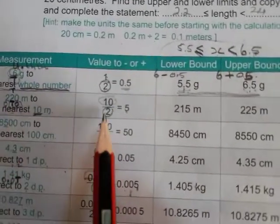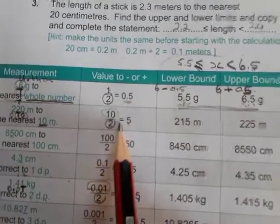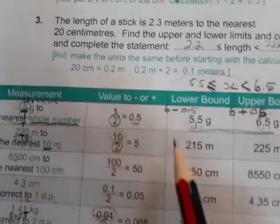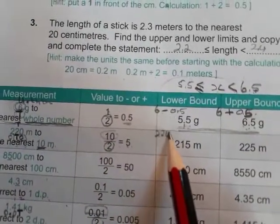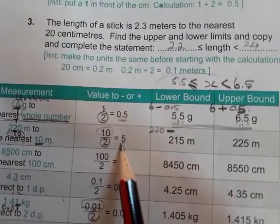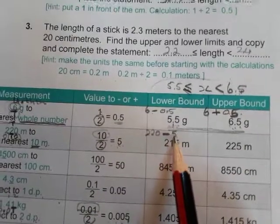Remember, here we got the 10. We divide that by 2, and we get 5. So now you take the original number that was given, 220. To get the lower bound, subtract this limit that you calculated, 5.